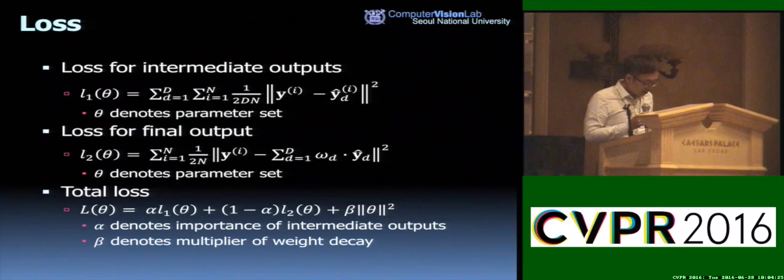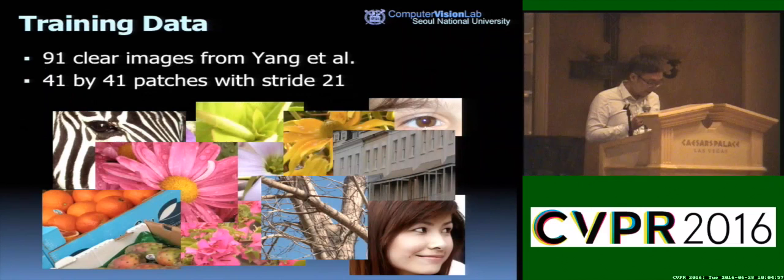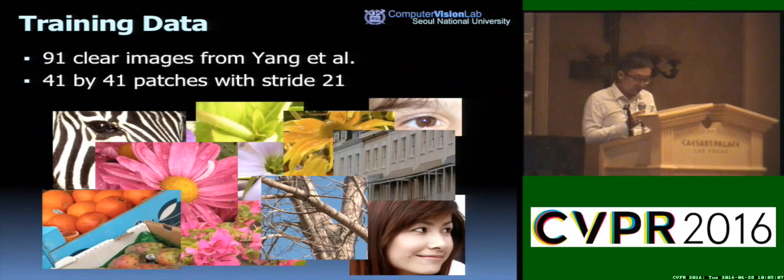This is the final loss from our techniques. L1 is the loss for intermediate outputs and L2 is the loss for the final output, so the total loss is the sum of L1 and L2. In the beginning of training, we set alpha near 1 to supervise each intermediate result first, which makes the training procedure stable as all recursions converge easily. As training progresses, alpha decays to boost the performance of the final output. The training data consists of 91 clear natural images, from which we extract 41x41 patches. Low-resolution images are paired with high-resolution ones using bicubic interpolation from MATLAB.